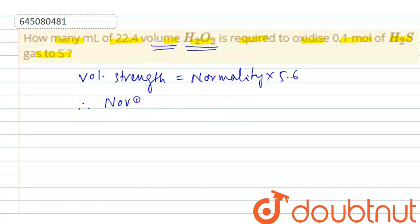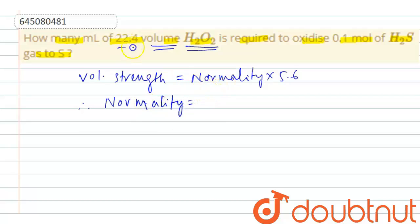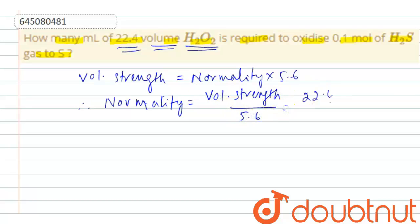Normality of the hydrogen peroxide solution = volume strength / 5.6 = 22.4 / 5.6 = 4. So the normality of the hydrogen peroxide solution is 4 N.